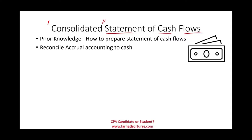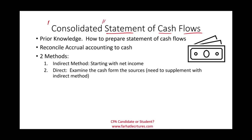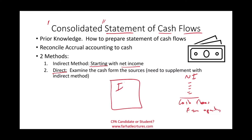What is the statement of cash flows? It basically reconciles accrual accounting to cash accounting. We have two methods: the indirect method and the direct method. In the indirect method, we start with net income and then prepare certain reconciliation items to arrive at cash flows from operations. In the direct method, we look at the income statement and convert each line into its cash equivalent — cash paid or cash received.